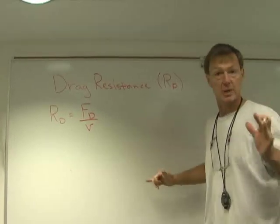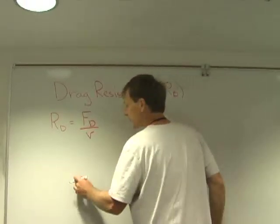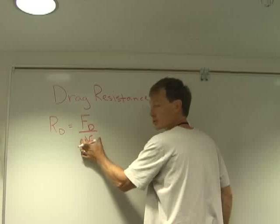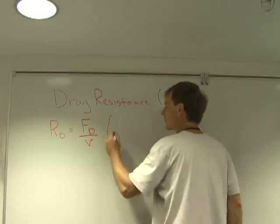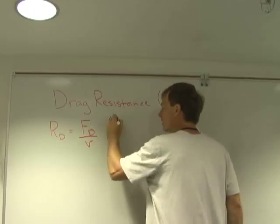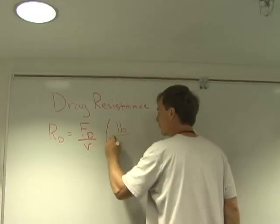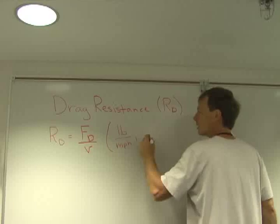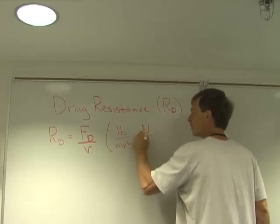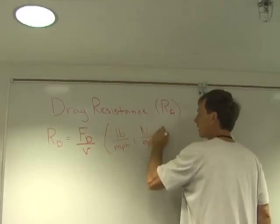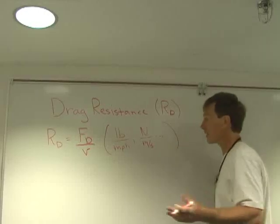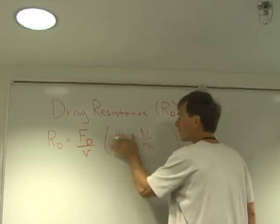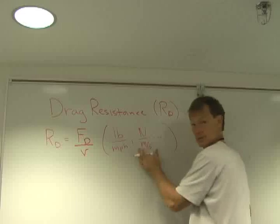Drag force over velocity. As there's a relationship between these, let me show you this. So drag resistance is drag force over velocity. Give you the units. It'd be like pounds per miles per hour, Newtons per meter per second. You can have a lot of these because it's units of force divided by some unit of velocity.